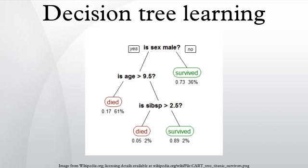Assume that all of the features have finite discrete domains, and there is a single target feature called the classification. Each element of the domain of the classification is called a class. A decision tree or classification tree is a tree in which each internal node is labeled with an input feature. The arcs coming from a node labeled with a feature are labeled with each of the possible values of that feature. Each leaf of the tree is labeled with a class or a probability distribution over the classes.